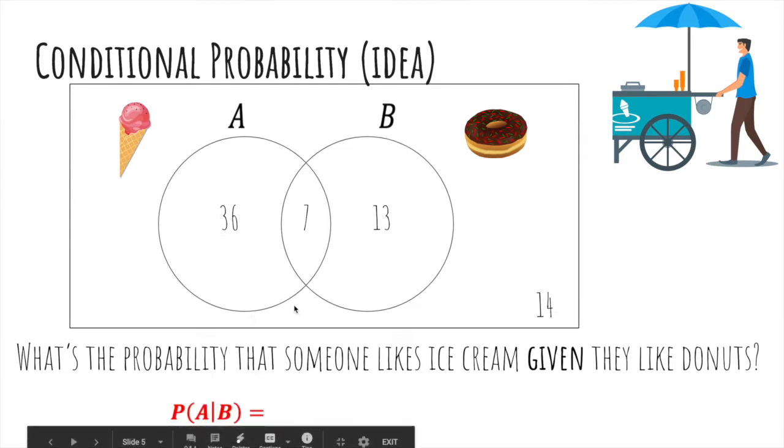This is written as the probability of A given B. It's the probability that A happens, given that you knew B definitely happened already.